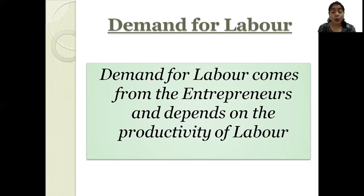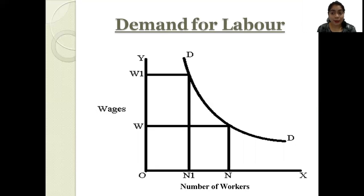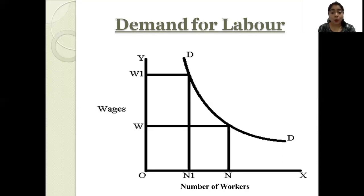We can understand this with the help of a diagram showing demand for labor. On the OX axis we have the number of workers, and on the OY axis, wages. When industries offer OW wages, the demand is for ON number of workers. When wages increase from OW to OW1, demand reduces from ON to ON1. That means on low wages, industries demand more workers, and on higher wages, fewer workers — causing the demand curve to slope downward.